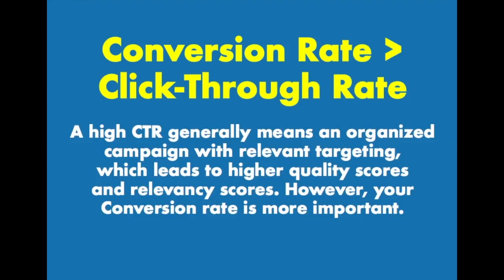Last but not least: a higher click-through rate generally means lower cost per click. On Google, a higher click-through rate gives you a better quality score, which gives you a better ad rank, which lowers your cost per click. We have a whole tutorial about what is quality score and how to optimize for it — definitely check that out on our channel. Facebook is the same exact way: increase your relevancy score, lower your cost per click, and increasing your click-through rate is going to increase your relevancy score.